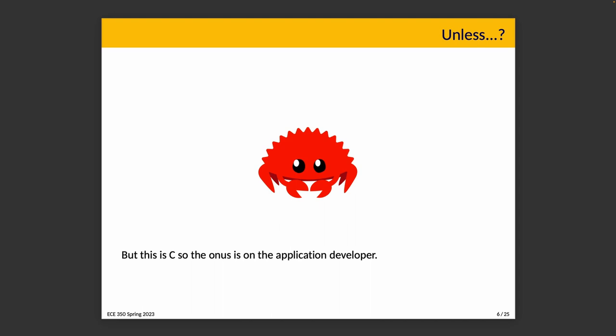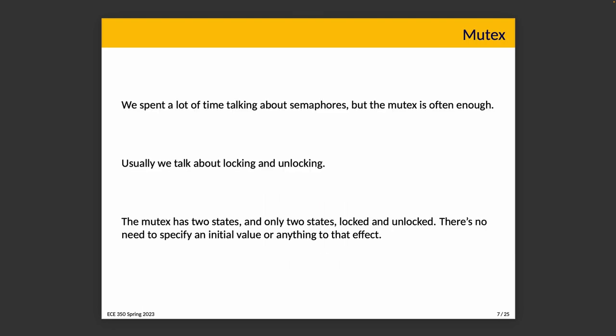The operating system does not and to a certain extent cannot second-guess the application developer's choices. So it is entirely possible that although you have correctly implemented semaphores and mutexes in your system, if people don't use them correctly, the program gets the wrong answer. We spent a lot of time talking about the semaphore because the general semaphore could be used to simulate many of the other things we've discussed. But initially we began with the binary semaphore, which represents a mutex.